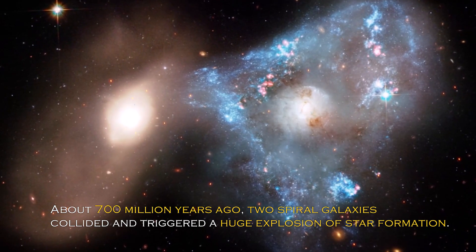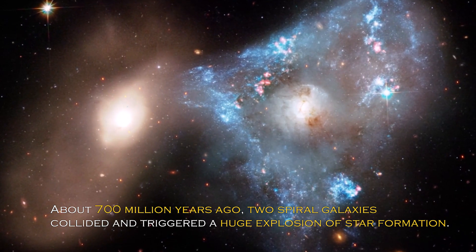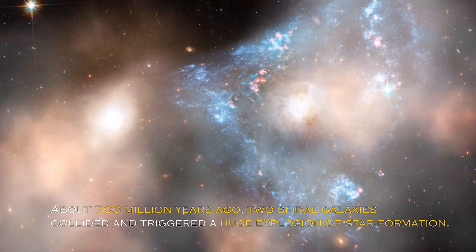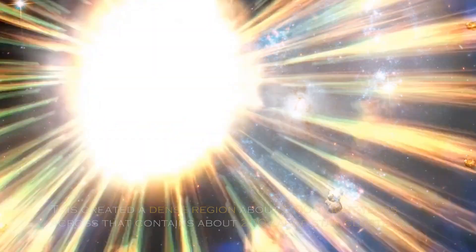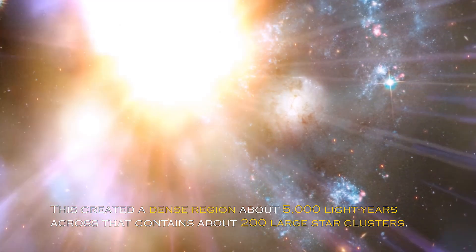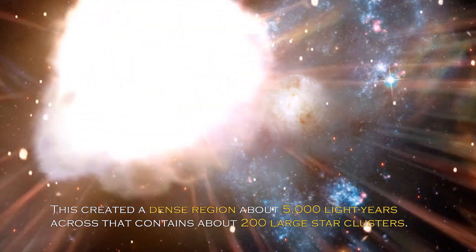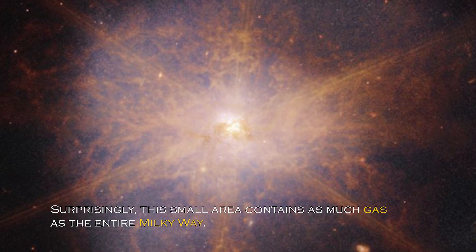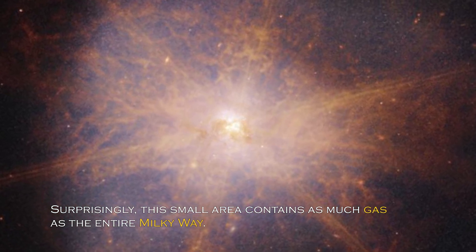About 700 million years ago, two spiral galaxies collided and triggered a huge explosion of star formation. This created a dense region about 5,000 light-years across that contains about 200 large star clusters. Surprisingly, this small area contains as much gas as the entire Milky Way.